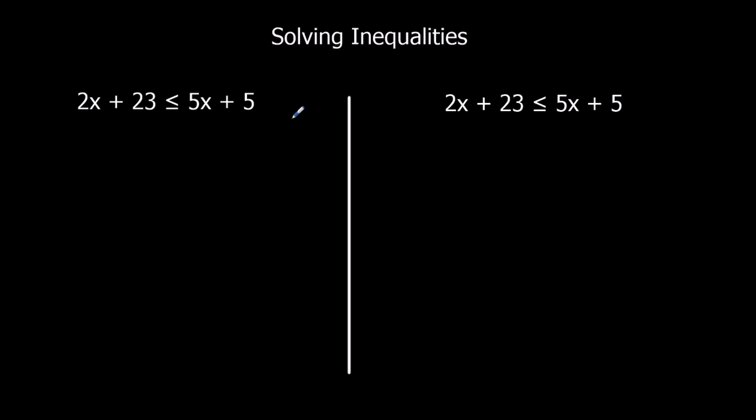Okay, so here I've got the same question twice. I'm going to show you how I always avoid dividing or multiplying by a negative number. So what I always say the first step is, is to take away the smallest x, get rid of the smallest x.